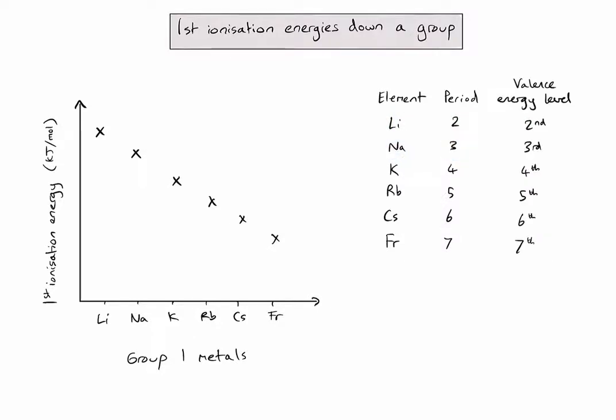So as I move down my group in the periodic table, the valence electrons are further and further from the nucleus. Meaning that there is going to be less electrostatic attraction between the nucleus and the valence electrons. And therefore, less energy is going to be required to remove that valence electron.